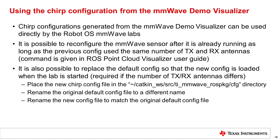To do this, place the new chirp config file in the catkin workspace slash source slash ti mmWave ROS package slash cfg directory, which holds the chirp configurations for the lab. Next, rename the original default config file to a different name. Finally, rename the new config file to match the original default config file. The default config files in the ROS point cloud visualizer lab are named according to their configuration, such as 1443-2d.config, 1443-3d.config, or 1642-2d.config. The default config file for the autonomous robotics with ROS for mmWave lab is named 1443-3d.config.